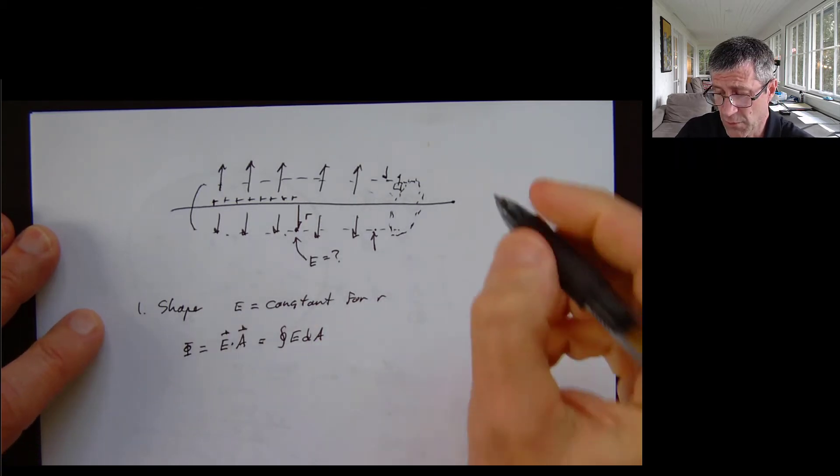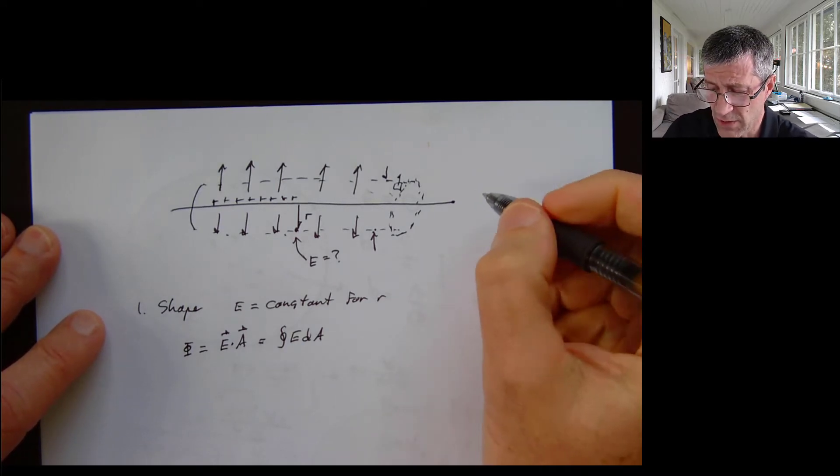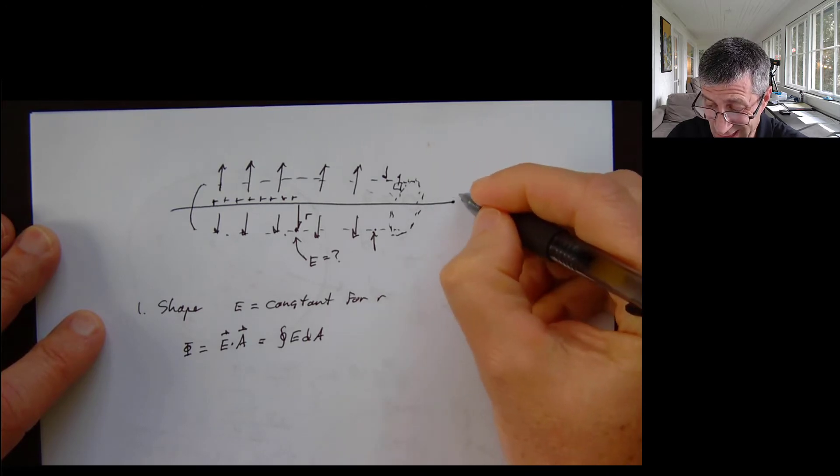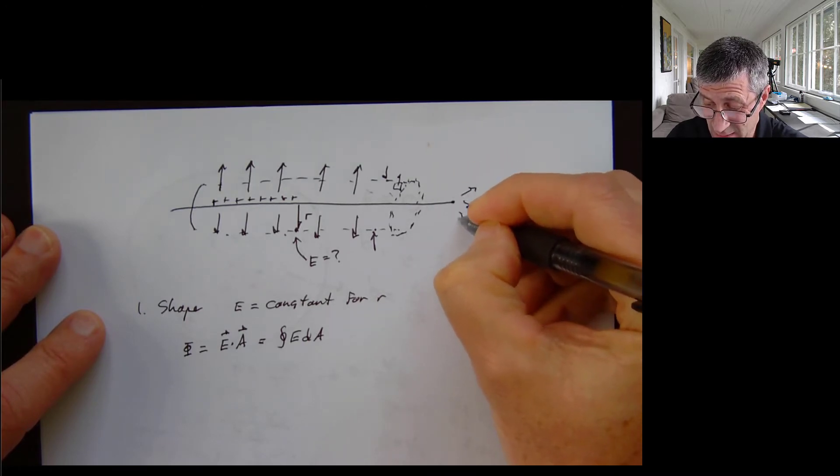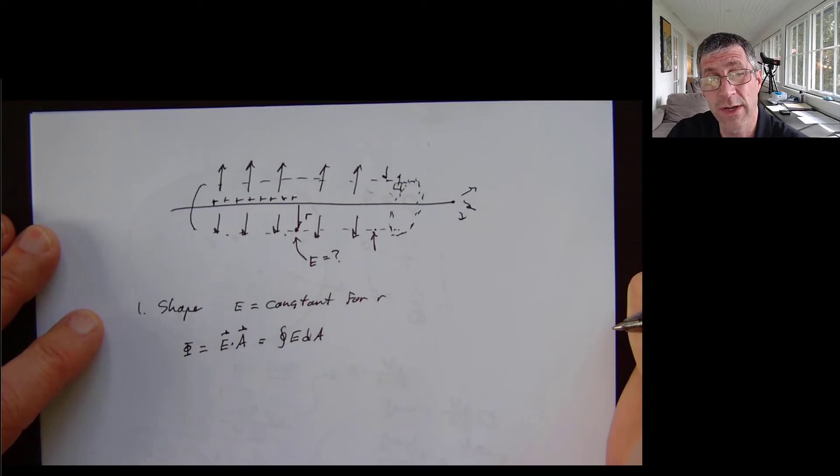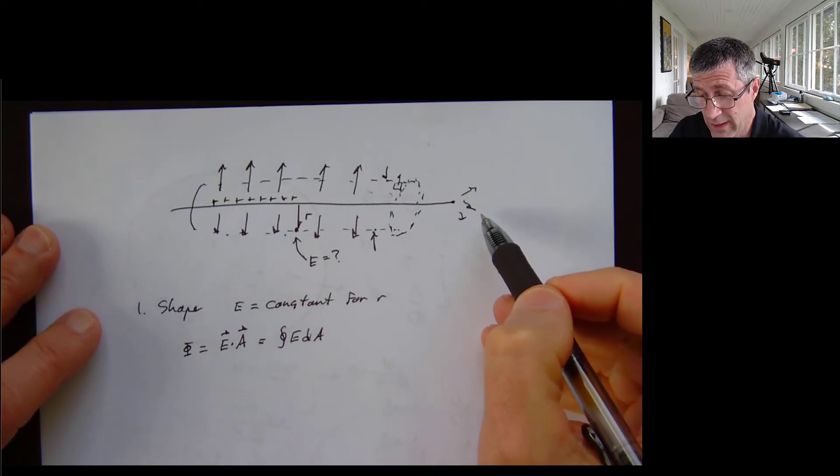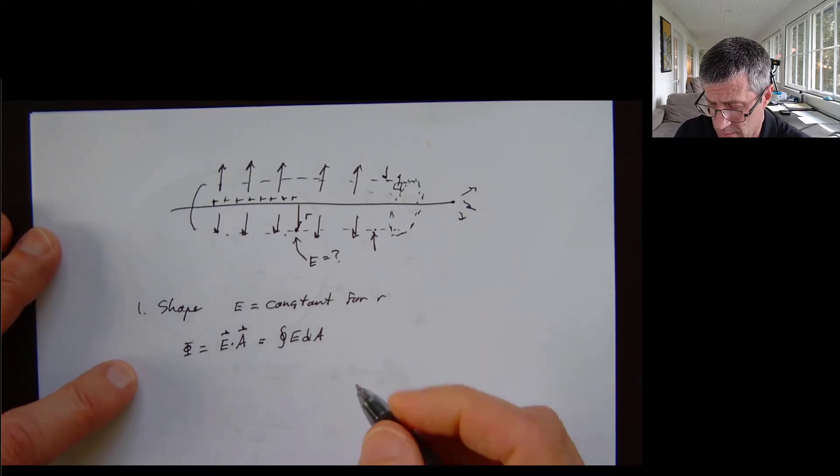And notice that I'm going to do this for long or infinitely long lines of charges, because I don't want to worry about the flux coming out the end. So technically at the ends, I have electric field lines or flux going out in awkward directions. And if I make this sufficiently long, that becomes sufficiently small that I can ignore it. There are other ways to get there, but we're going to do simple ways.